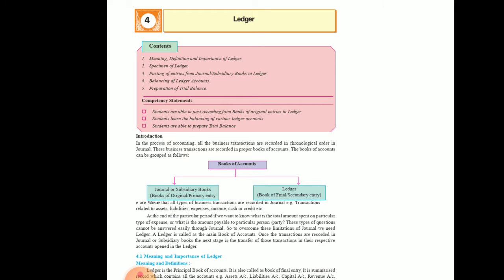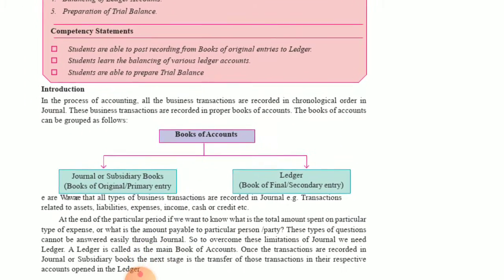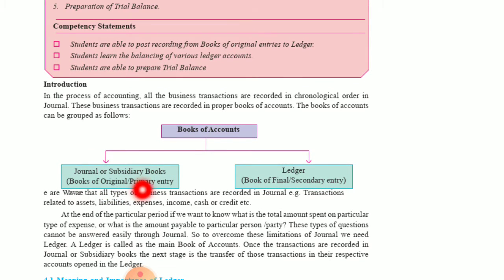The main entry, the first entry of the transaction, is done in the journal book. After this journal, we have to post it to the ledger. There are two types of books of account: the journal and subsidiary books, which are the book of original entry or prime entry or primary entry. The second book is the ledger, which is a book of final and secondary entry.